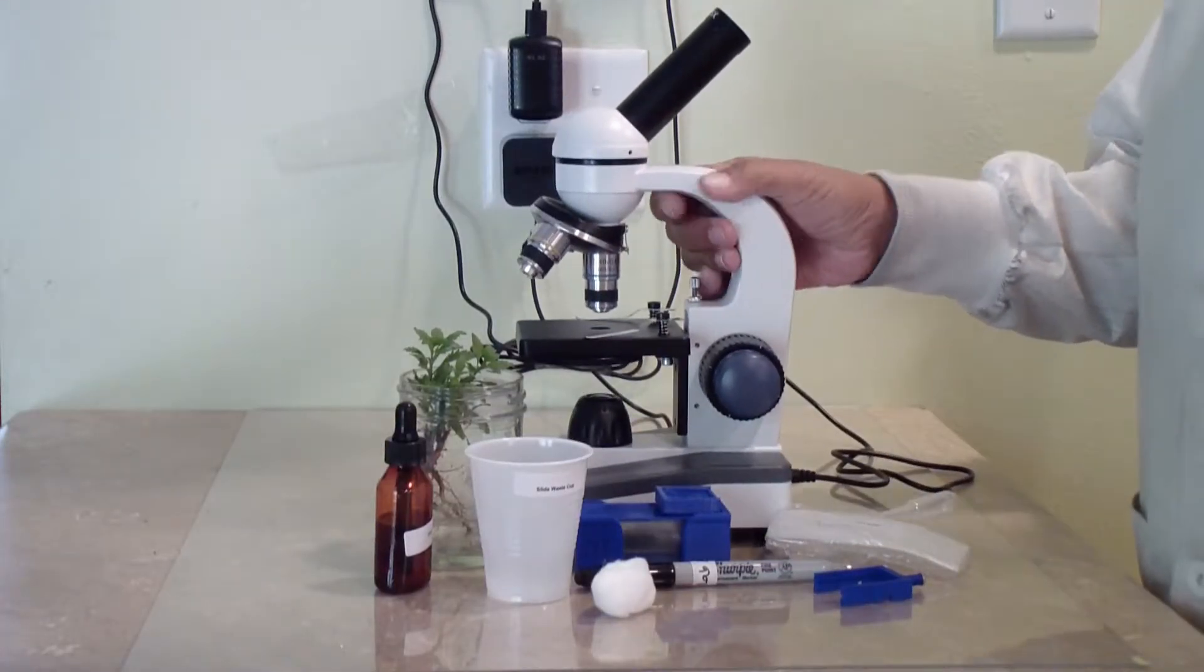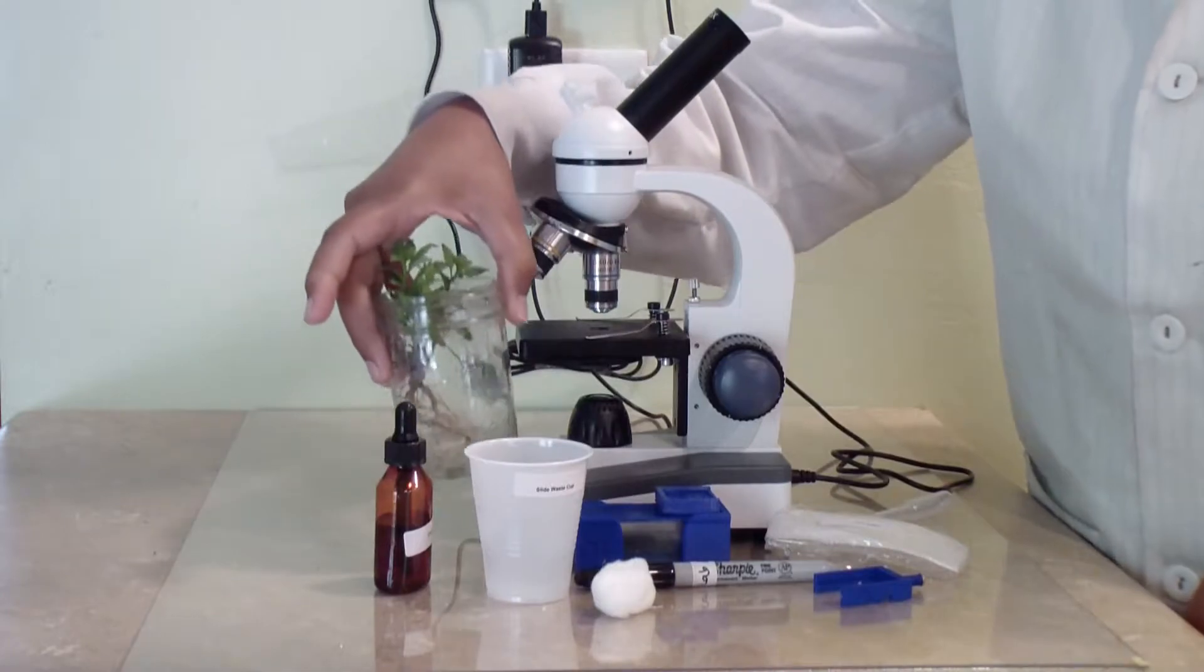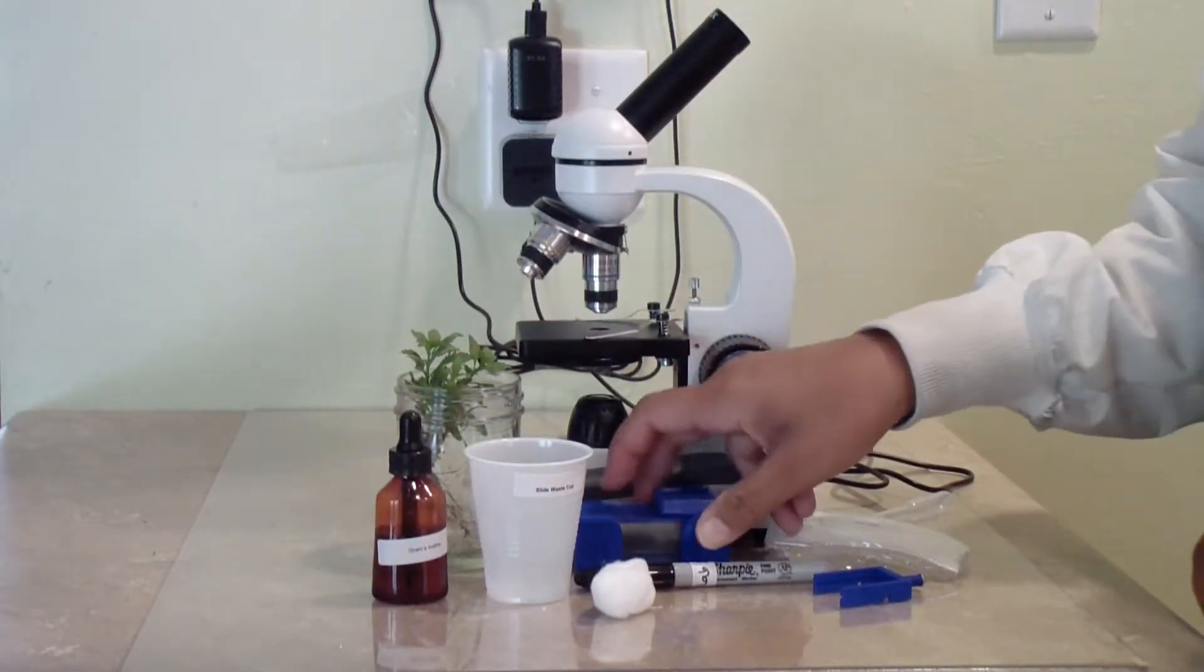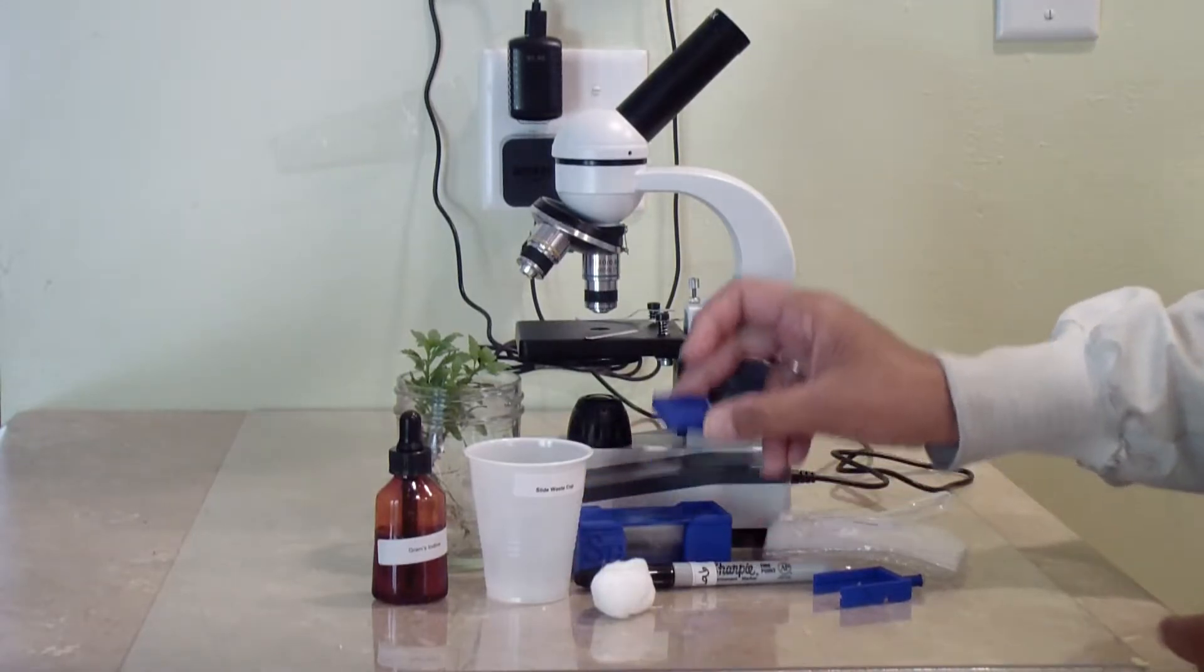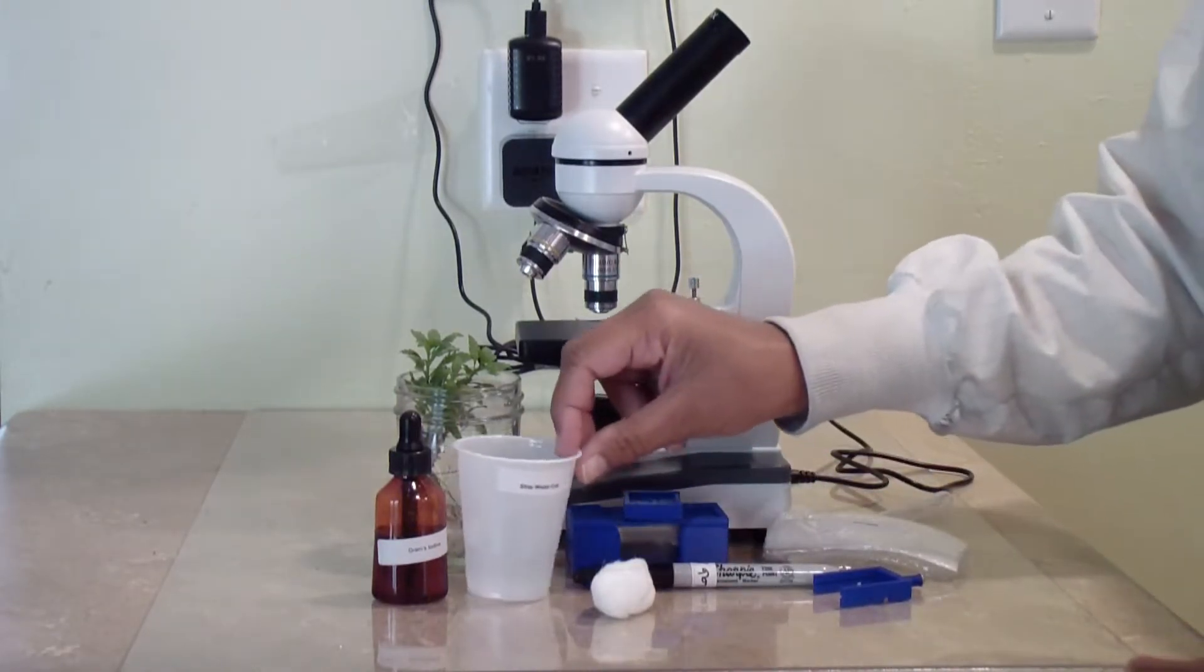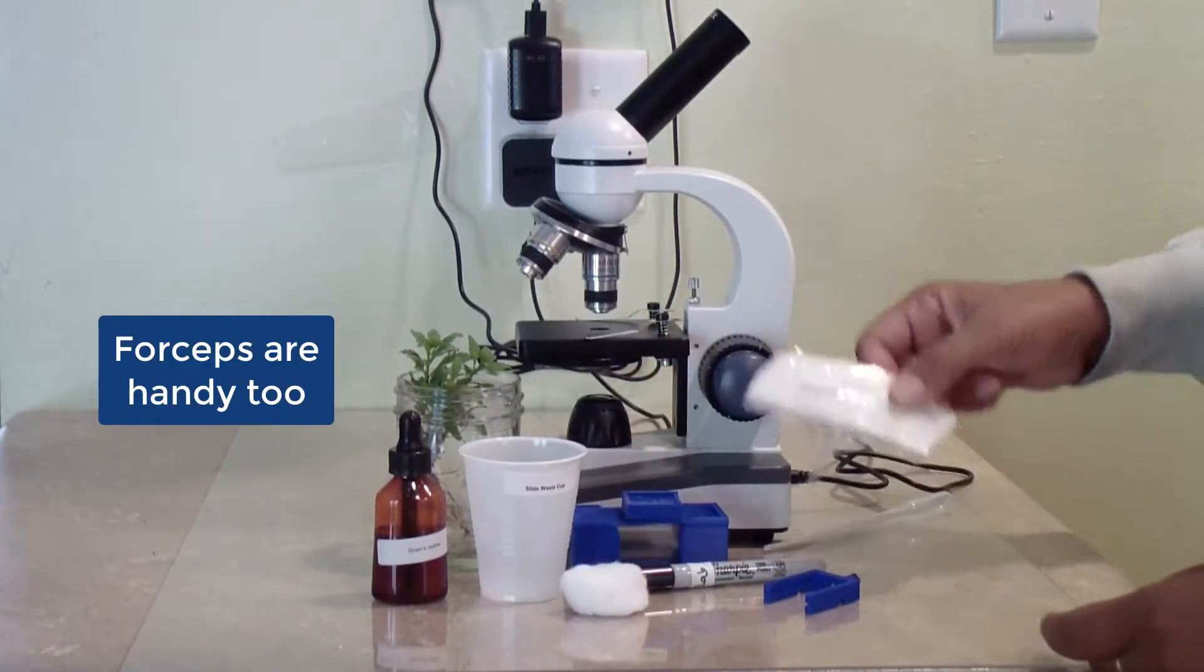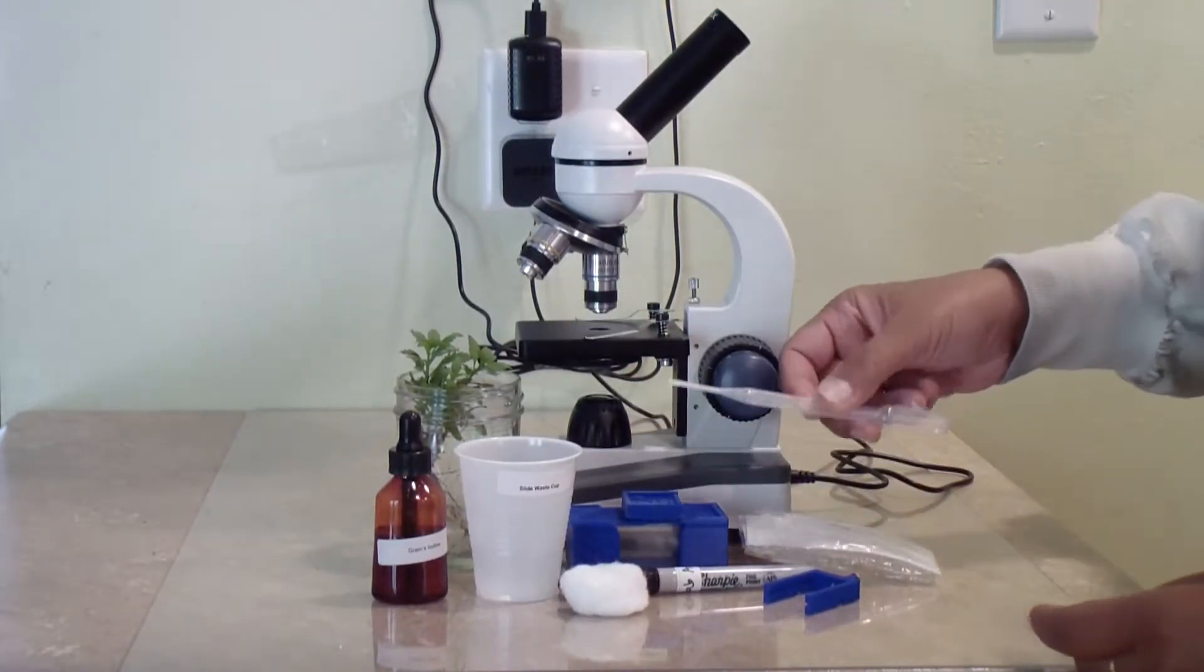The supplies you need are the microscope, the wet mount sample you previously prepared, grams iodine, a glass slide, a cover slip, the waste cup to catch any spills, the slide holder, a marker, a tiny piece of fiber from the cotton ball, and lens paper.